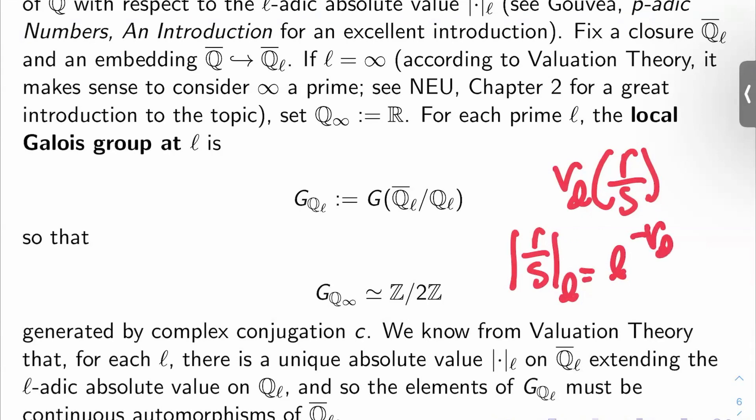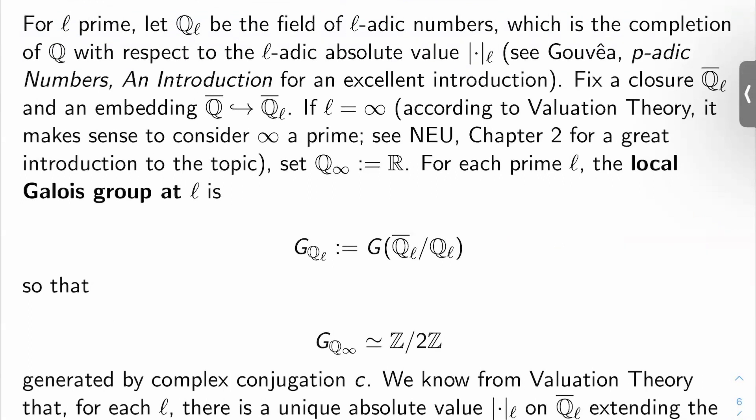So you can check this is an absolute value, and you can check that up to equivalence you have kind of one absolute value on Q for each ℓ, and then the usual absolute value from grade school, and there are no other absolute values, actually. If you want to learn more about p-adic numbers, look at Gouvêa's book. Anyway, so we have the ℓ-adic numbers. So let's fix a closure. This is not algebraically closed as a field, so let's take an algebraic closure of it, Q-bar_ℓ...